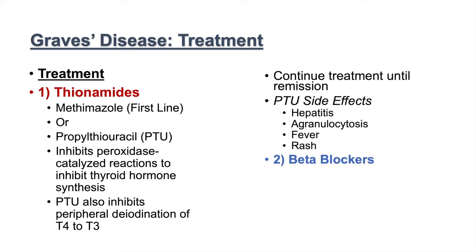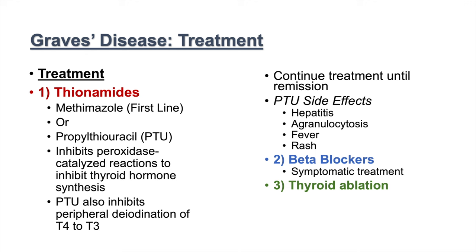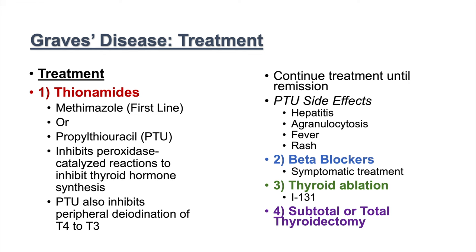Other treatments for Graves' disease include beta blockers for symptomatic relief, thyroid ablation using I-131 in certain circumstances, and subtotal or total thyroidectomy in severe cases.